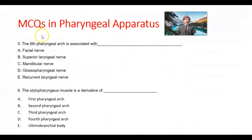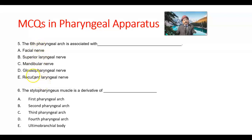Question number 5. The sixth pharyngeal arch is associated with what nerve? Options: facial nerve, superior laryngeal nerve, mandibular nerve, glossopharyngeal nerve, recurrent laryngeal nerve. The answer is recurrent laryngeal nerve. This nerve innervates all the intrinsic muscles of the larynx except the cricothyroid.